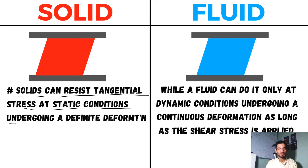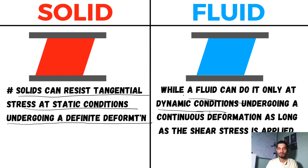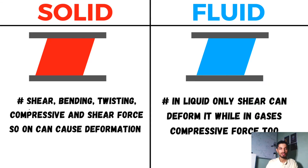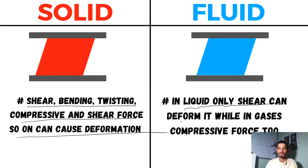So to summarize the differences: in solid we have elastic and fixed deformation, while in fluid we have permanent and continuous deformation. Solid can resist tangential (shear) stress at static conditions undergoing a definite deformation, but fluid can resist shear stress only in dynamic conditions undergoing continuous deformation as long as the shear stress is applied. In solid, shear, bending, twisting, and compressive forces can cause deformation; in liquid only shear can deform it, while in gases compressive force too can deform it.